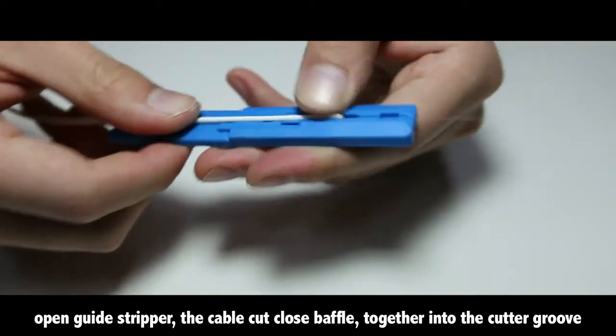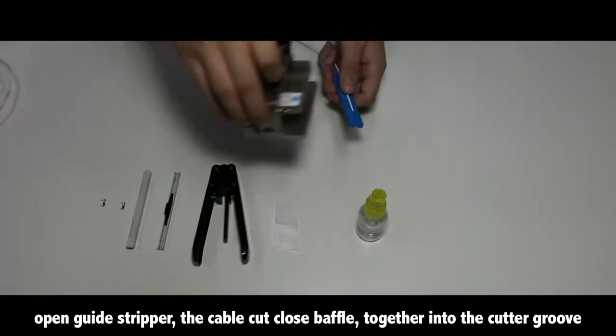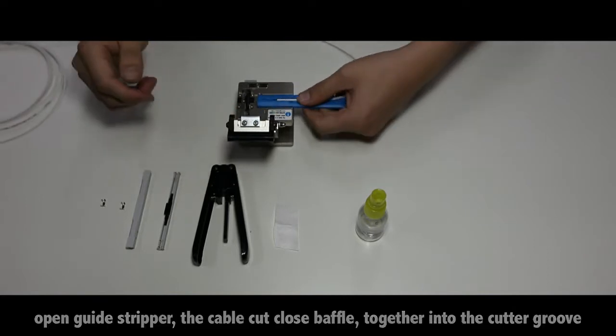Open the guide stripper. Position the cable cut close to the baffle, together into the cutter groove.